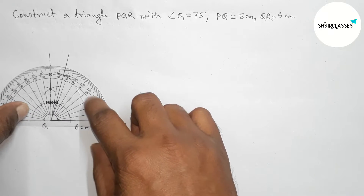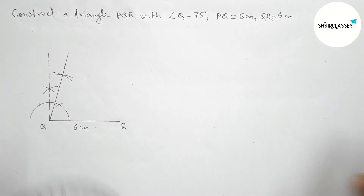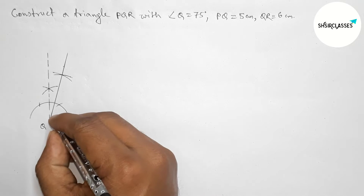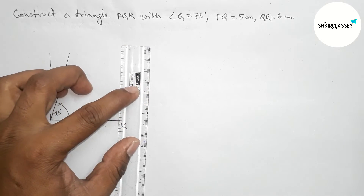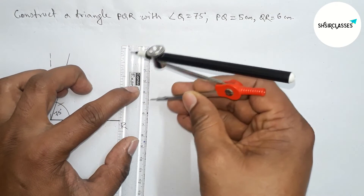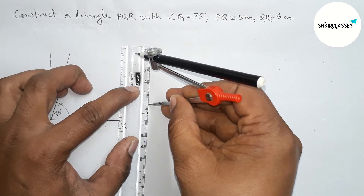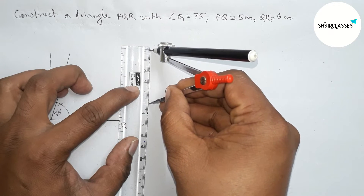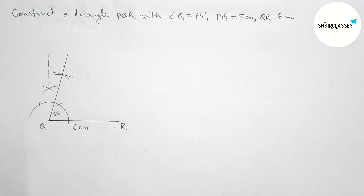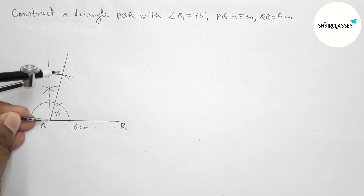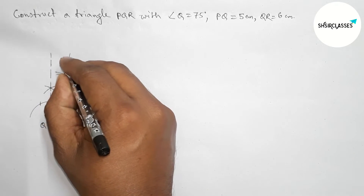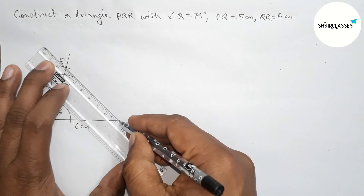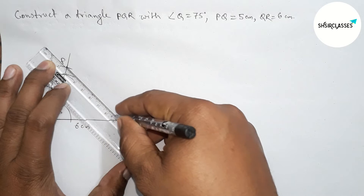Checking — this is perfectly a 75 degree angle. So here angle Q equals 75 degrees. Next, taking PQ equal to 5 centimeters with the help of a scale and compass. This is a 5 centimeter line segment length. Now putting the compass on point Q and cutting the arc here, taking point P.